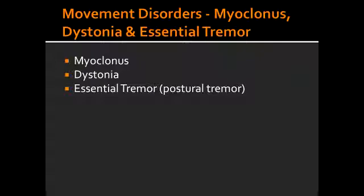What is dystonia? Dystonia is a sustained involuntary muscle contraction. Name a few types of dystonias. Some types of dystonias include writer's cramp and blepharospasms, which is a sustained eyelid twitch.